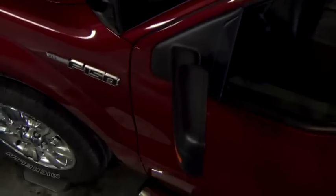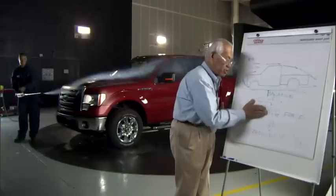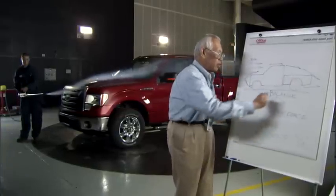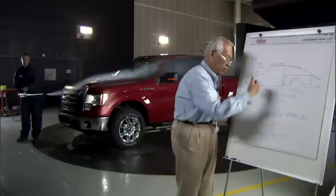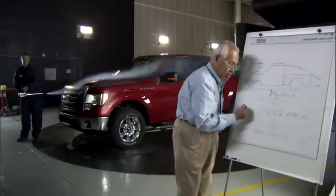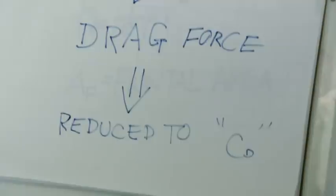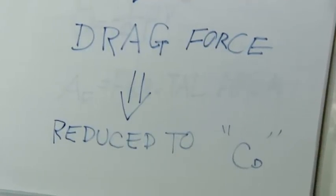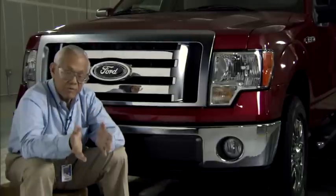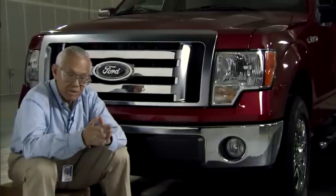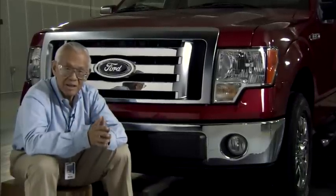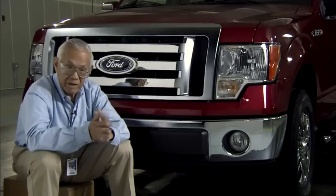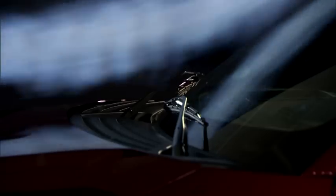We put the vehicle on the balance and measure the drag force, which is the force pushing the vehicle back in the direction against the wind. We measure this drag force and then reduce it to a term called C-D, or drag coefficient. Drag coefficient is a non-dimensional number that relates to the efficiency of the shape — whether the vehicle is efficient or not.